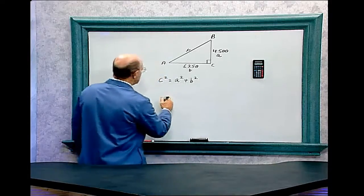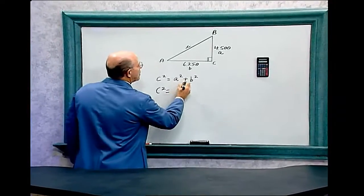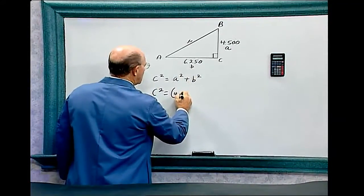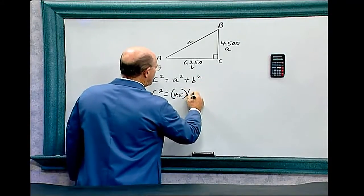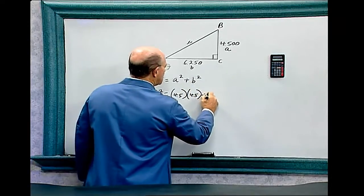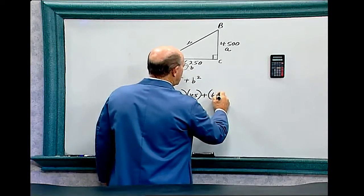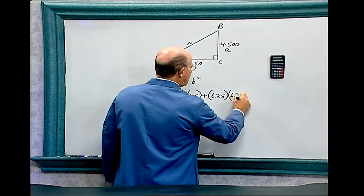So, let's just put in the numbers, c-squared equals a-squared, and that's 4.5, we don't have to put the zeros in, because it doesn't amount to anything when you have zeros after a decimal point, times 4.5 plus b-squared is 6.25, 6.25 multiplied by 6.25.